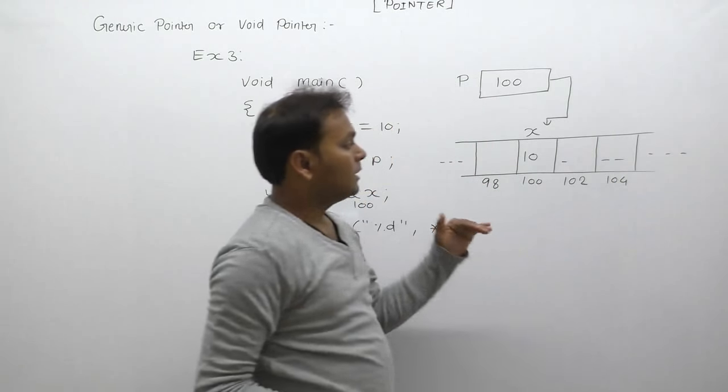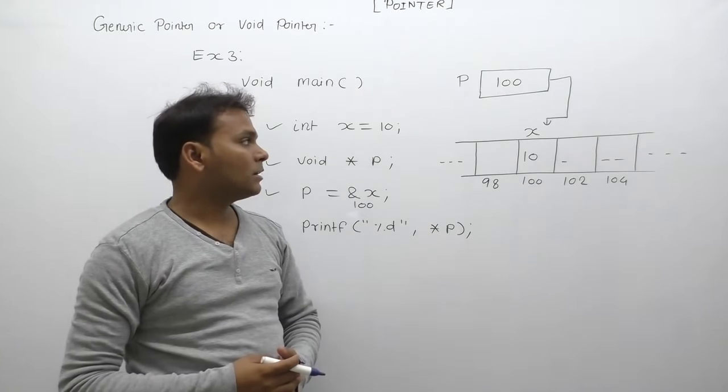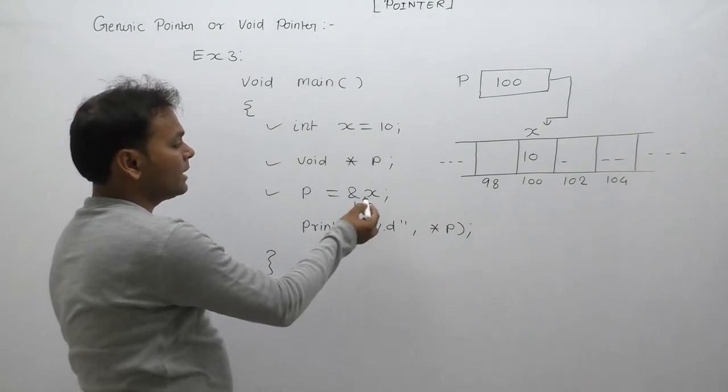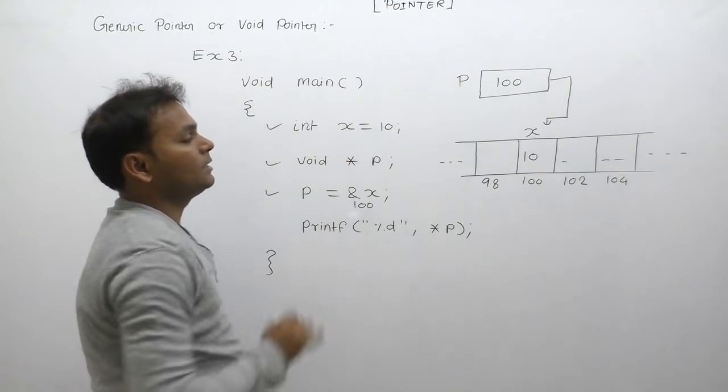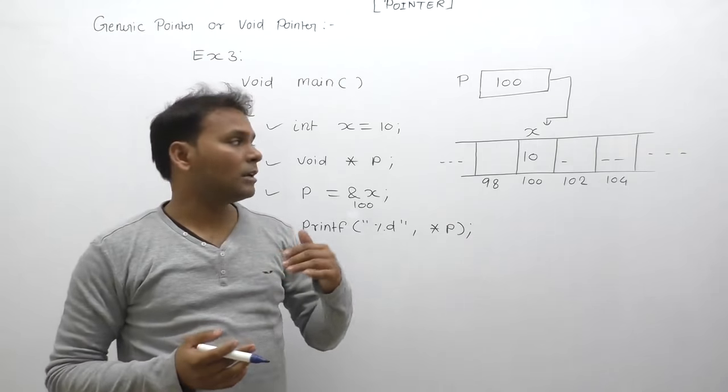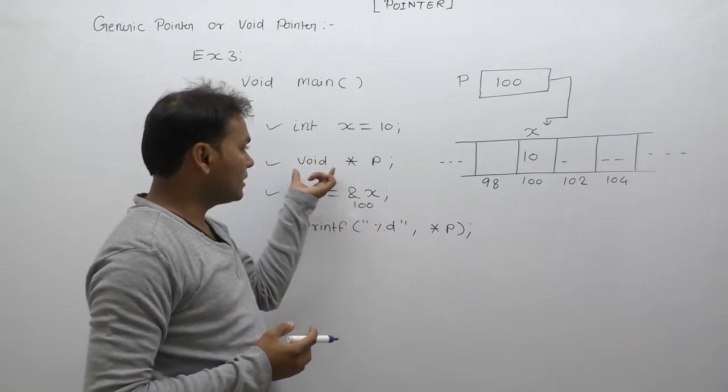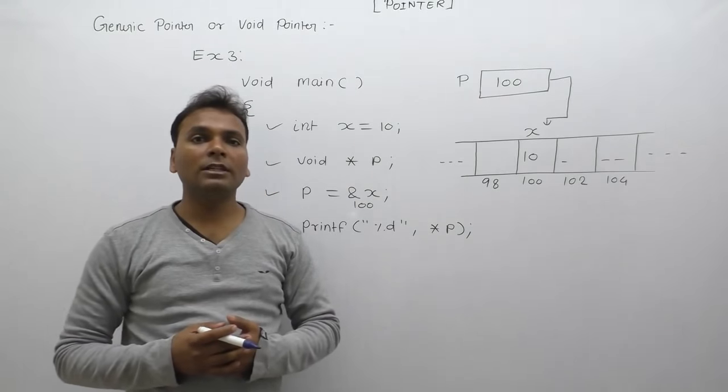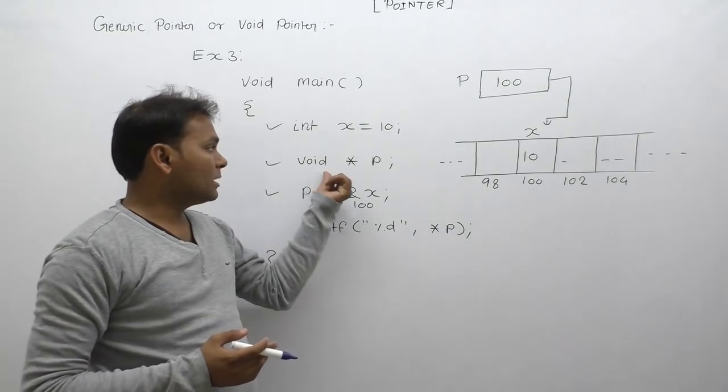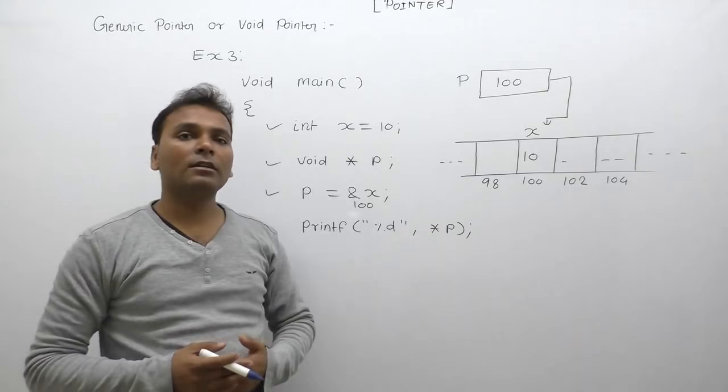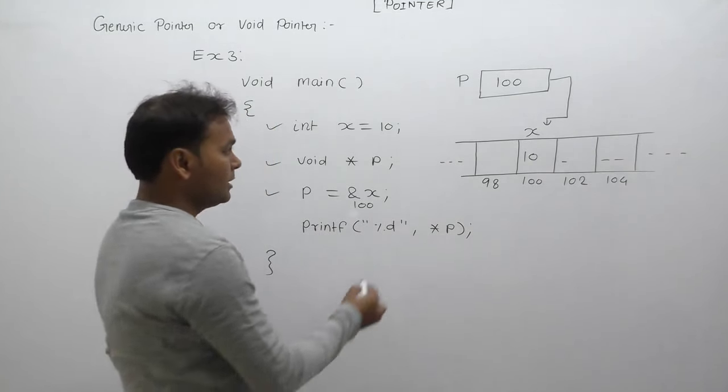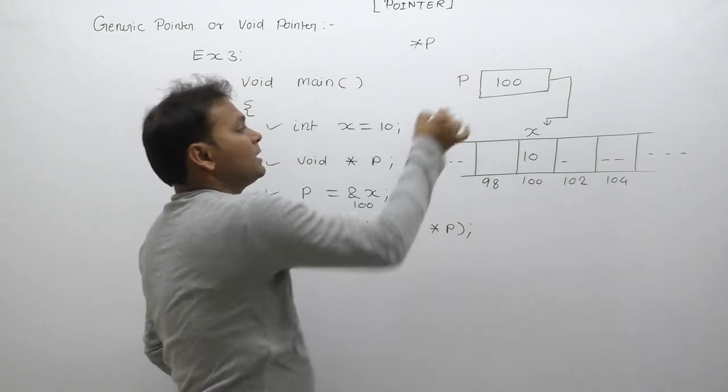Now, from 100 onwards, how many bytes does the pointer point to? If you have confusion in this case, p's address is there, and x's type is integer. We already discussed: depending on the type of pointer - character pointer then one byte, integer pointer then two bytes, float pointer four bytes. In void pointer case, we cannot determine how many bytes are pointed by this pointer p. That's why we cannot create a location called star p directly.